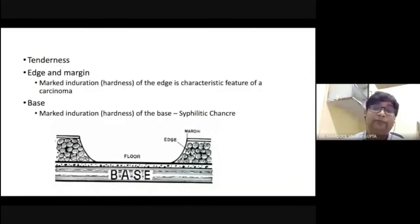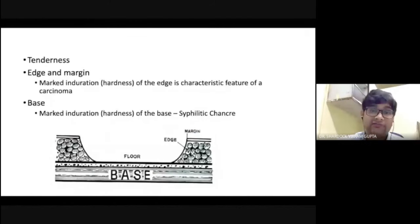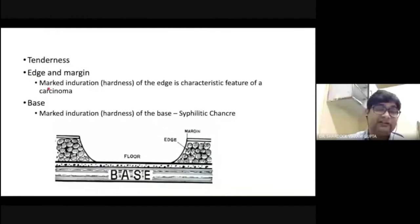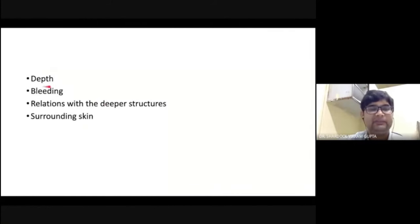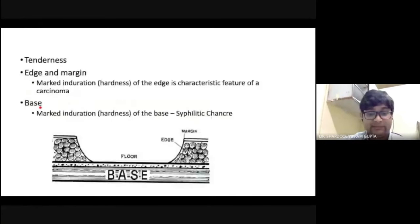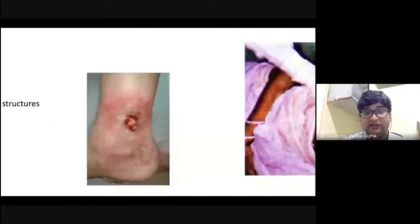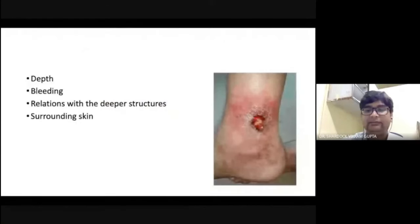You must also inspect the whole limb for varicosity or peripheral arterial disease. Now coming to palpation — first you will confirm all the inspectory findings, then assess whether the ulcer is tender or not. Feel for the edge and margin, whether there is marked induration. Marked induration of the edge is characteristic of carcinoma, while marked induration of the base is characteristic of syphilitic chancre. Assess the depth — whether it is deep or shallow — any associated bleeding, and the relation to deeper structures like muscle or bone. If you pinch the ulcer, you can feel the base.